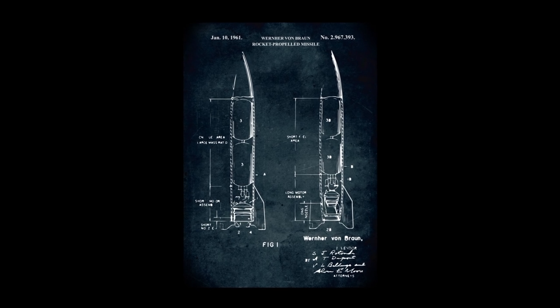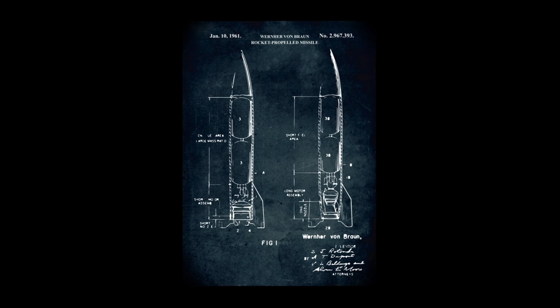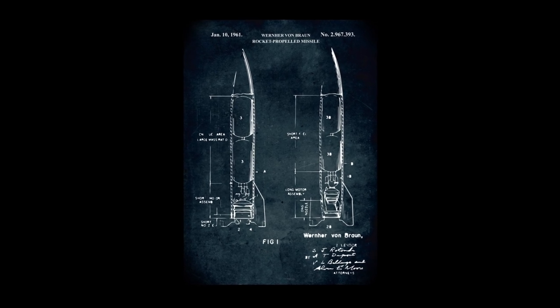The missile knows where it is at all times. It knows this because it knows where it isn't. By subtracting where it is from where it isn't, or where it isn't from where it is,